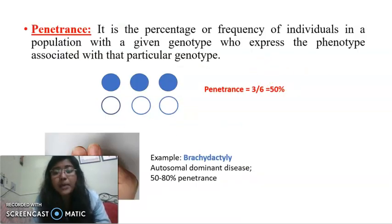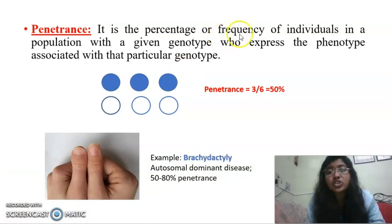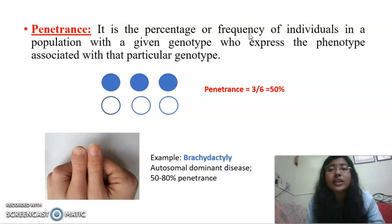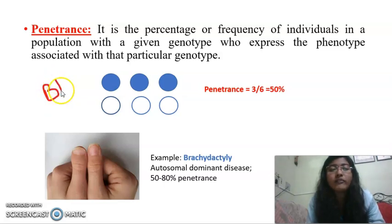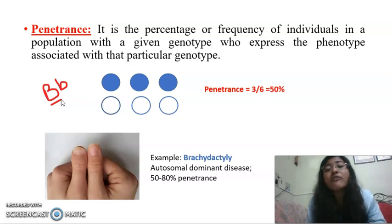What is penetrance? Penetrance is the percentage or frequency of individuals in a population with a given genotype who express the phenotype associated with that particular genotype. To explain with an example: say there is a population of six organisms, and all six organisms have the same genotype, capital B small b. Capital B is responsible for the expression of blue color.